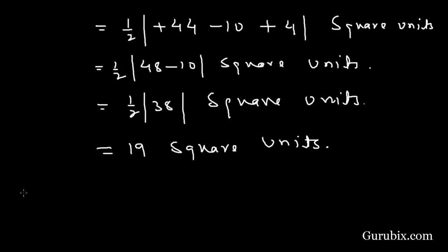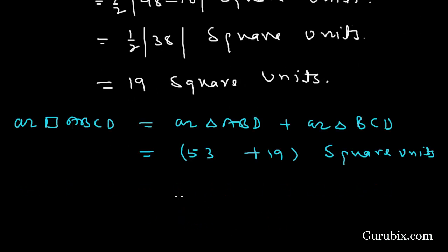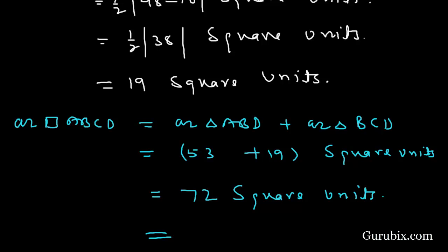Now we can easily find the area of quadrilateral ABCD. Area of quadrilateral ABCD = area of triangle ABD + area of triangle BCD = 53 + 19 = 72 square units. This is the solution of the question. Thank you.